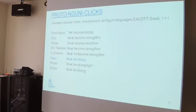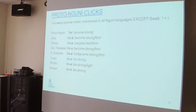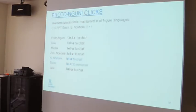We can also reconstruct voiceless alveolar clicks — these are found in any Nguni language that has alveolar clicks. Swati lacks alveolar clicks, and in Swati these regularly correspond to dental clicks. For example, the word for 'to become strong' is realized with an alveolar click in all Nguni languages except Swati, where it surfaces with a dental click. There are many other cases of voiceless alveolar clicks in Nguni languages corresponding to voiceless dental clicks in Swati. Similarly, voiceless lateral clicks are maintained in languages that still have lateral clicks, and in languages that lost them — such as Southern Ndebele and Swati — they have changed to dental clicks.